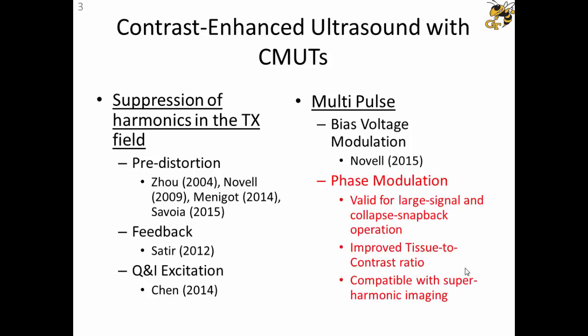So in this talk, we are proposing another multipulse method based on a phase-modulated inter-pulse multipulse scheme, which is developed for large signal and also collapse snapback operation, which is an extreme case for device nonlinearities. Also, it inherently improves the contrast ratio, and it's compatible with super-harmonic imaging, so we can use imaging using multiple harmonics.